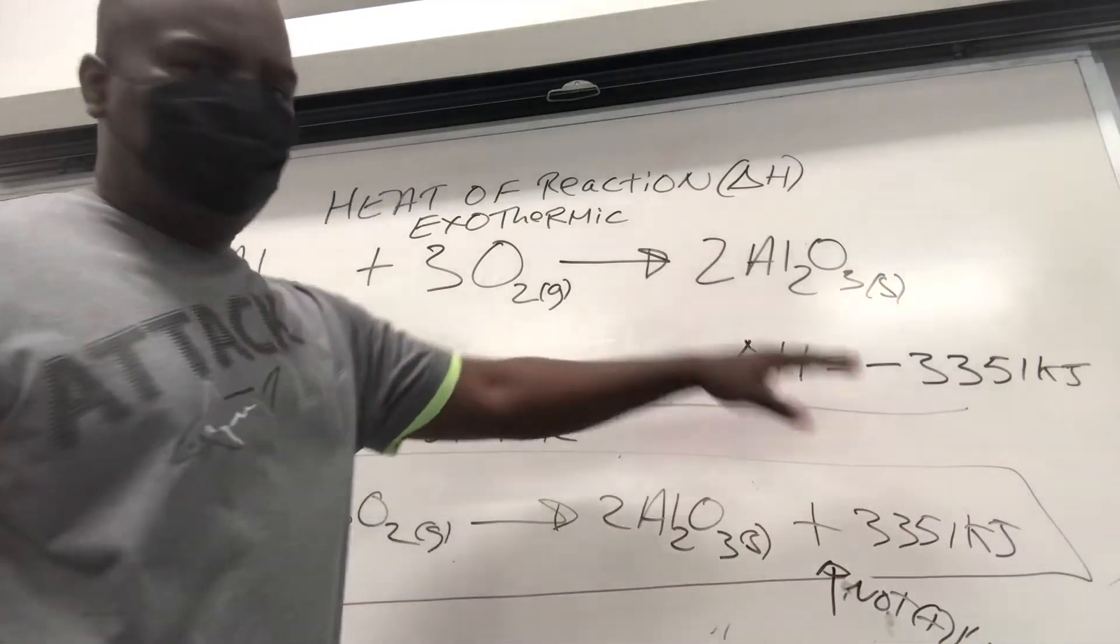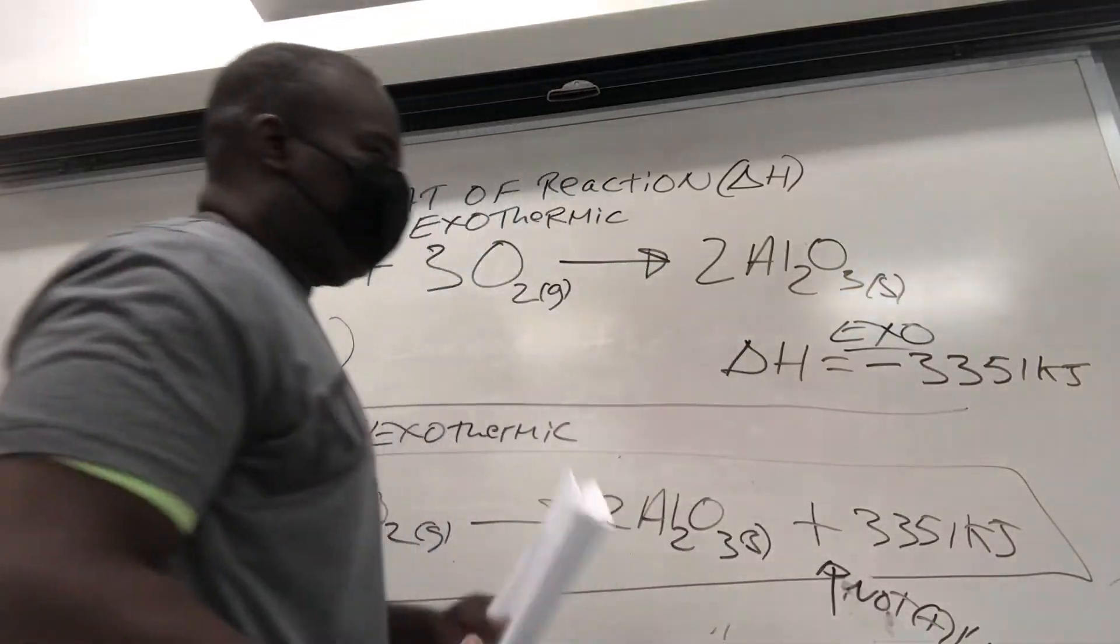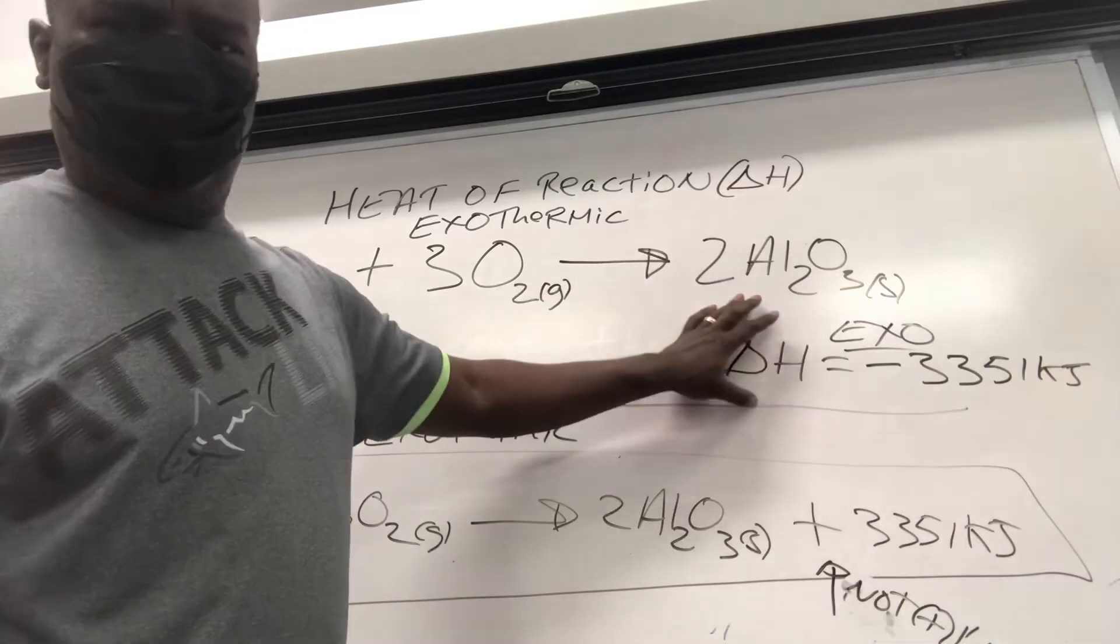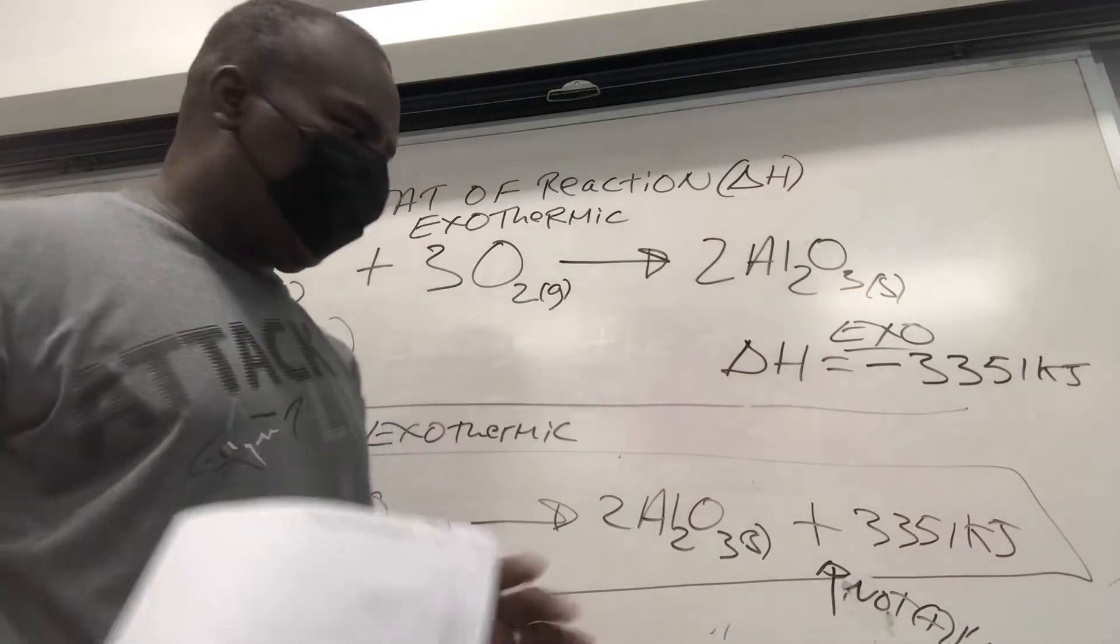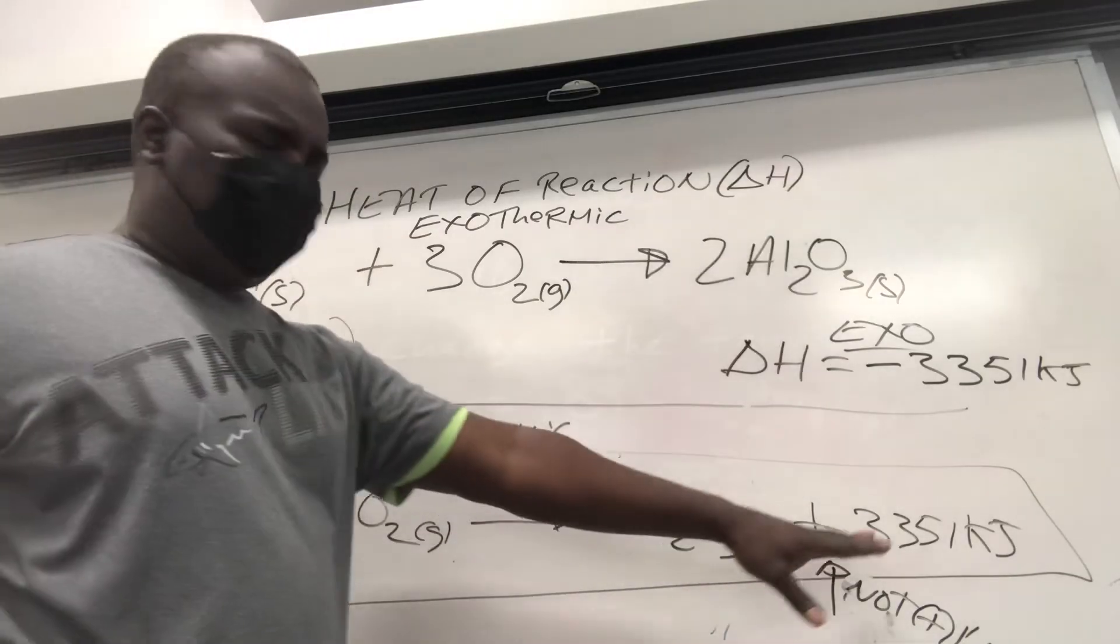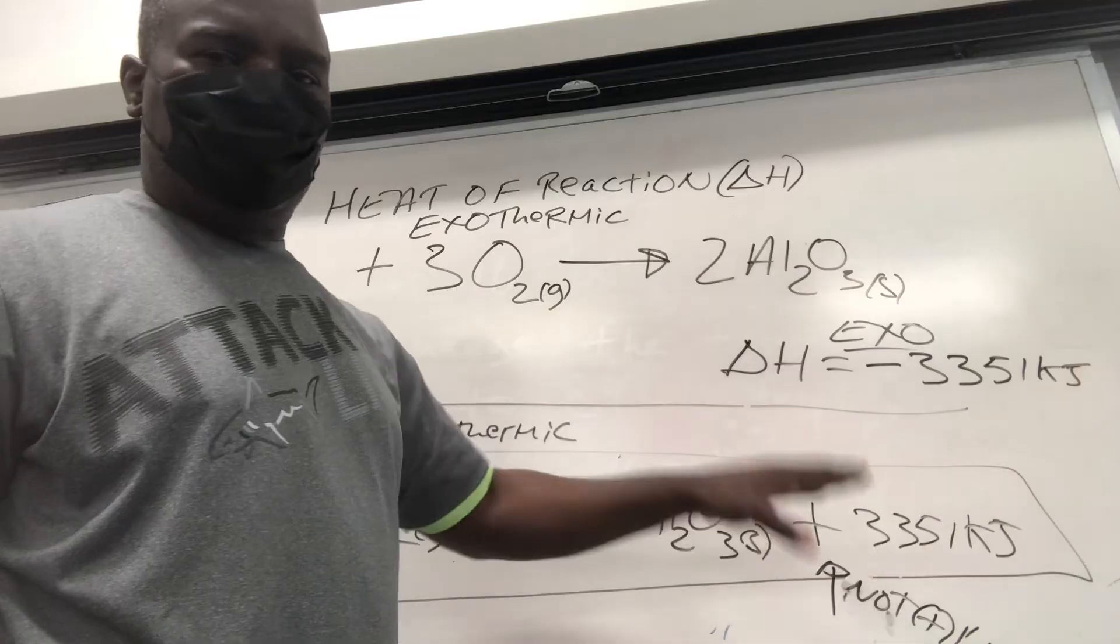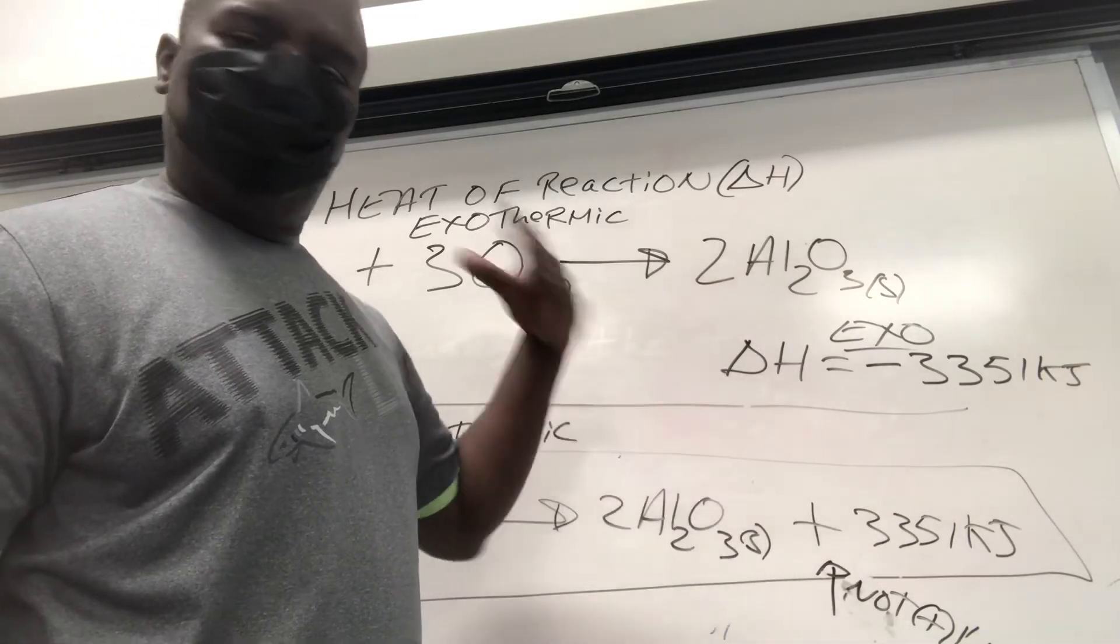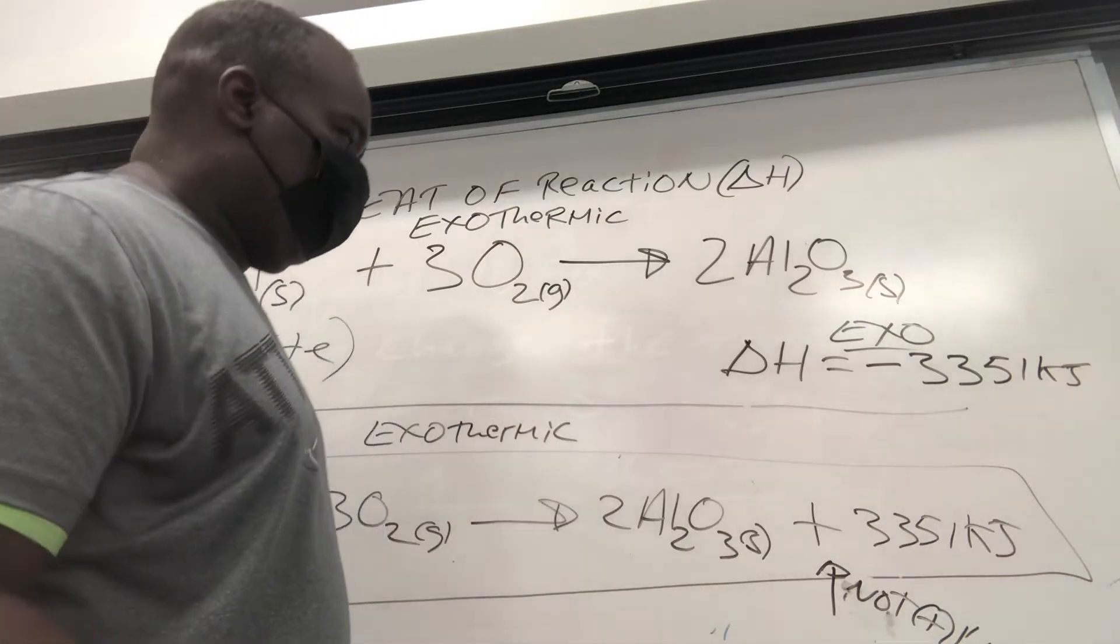So once again, negative delta H represents what? Represents exothermic. If you see the reaction or the process and delta H is written to the side and it's negative, that's exo. Or if they write the heat in the reaction and it's on the right side or product side, that also means it's exothermic. There's two different ways to represent exo, two different ways to represent endo. Don't mix and match them.